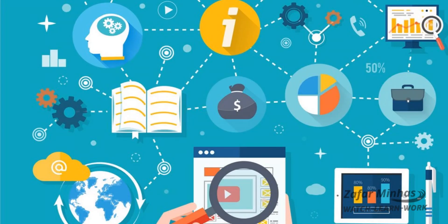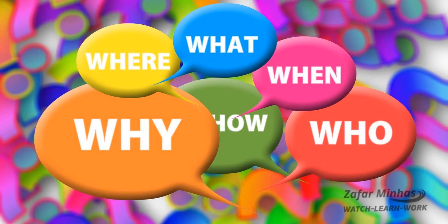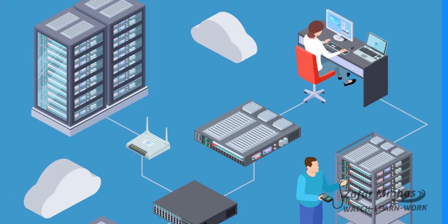Amidus information system is an essential source of reference information which is available to all Amidus users. Some information is updated by Amidus, others by external providers.